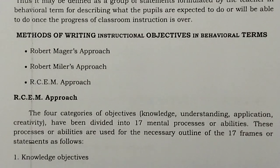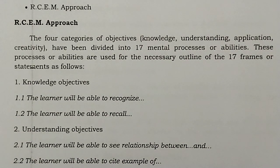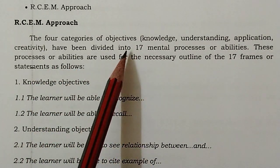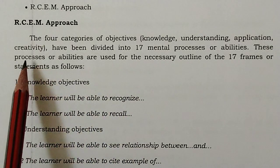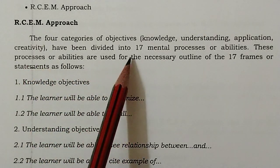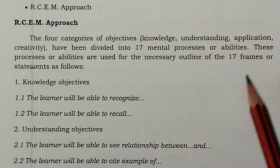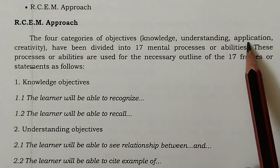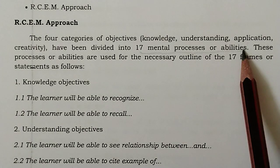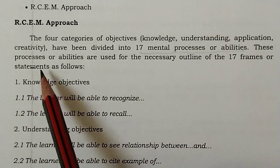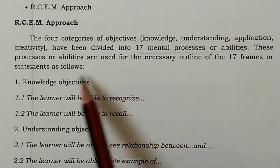For the RCEM approach, the most important aspect is the use of four categories of objectives: first is Knowledge, second is Understanding, third is Application, and fourth is Creativity. These four categories are divided into 17 mental processes or abilities, which are used for the necessary outline of 17 frames or statements.